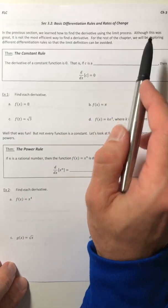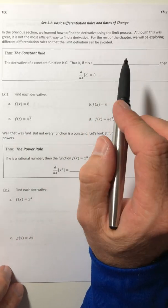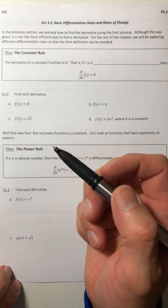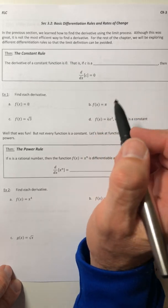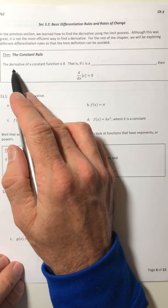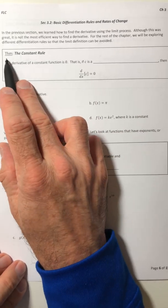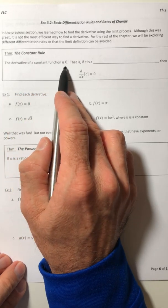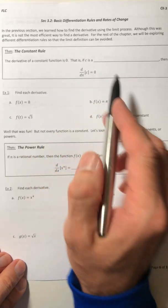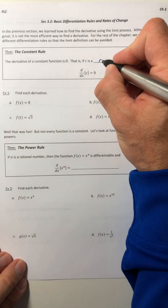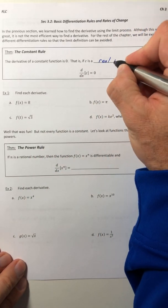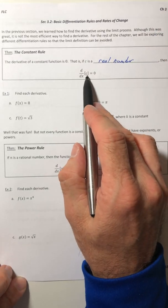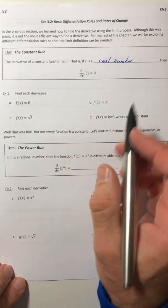So for the rest of this chapter, we're going to be looking at different differentiation rules so that that limit can be avoided, which is kind of nice. All right, so let's look at the constant rule. The derivative of a constant function is zero. That is, if c is a real number, then the derivative of that c, whatever number that is, is going to equal zero.